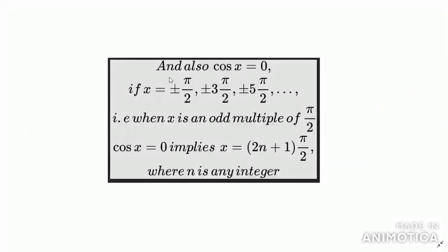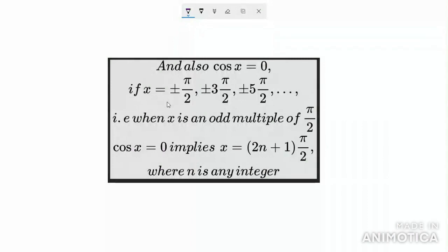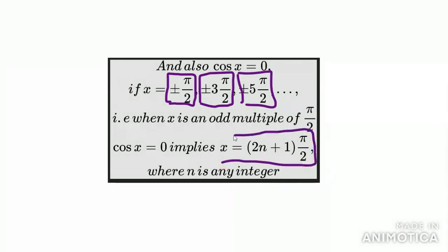Similarly, cos x = 0 when it is an odd multiple of π/2 — even from the negative side. Cos(−90°) = 0, because the point is again on the y-axis. So cos(±π/2) = 0, cos(±3π/2) = 0, and so on. In general, cos x = 0 when x = (2n+1) · π/2, where n belongs to Z. Memorize this result; it will be applied for solving questions later.